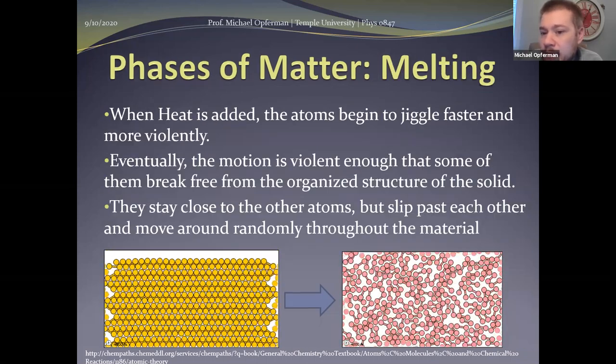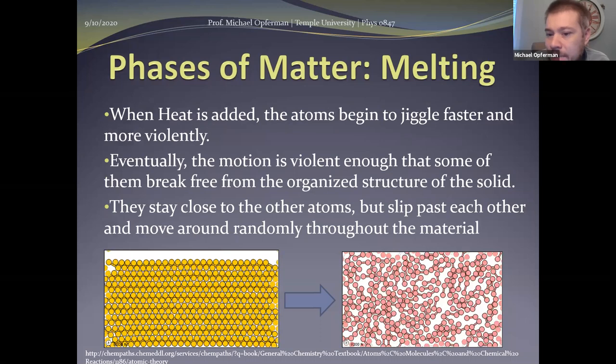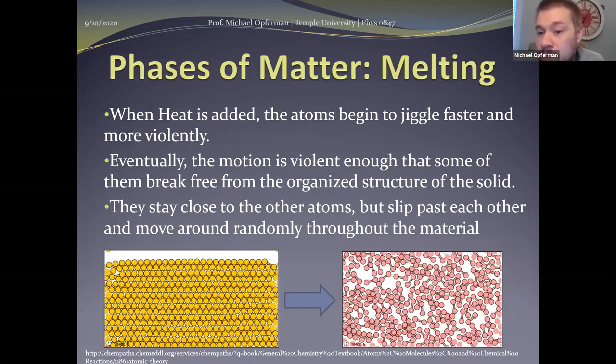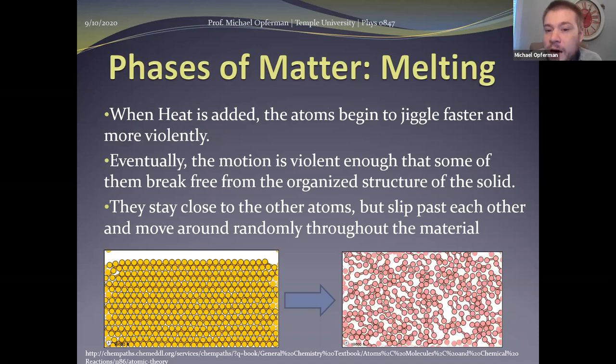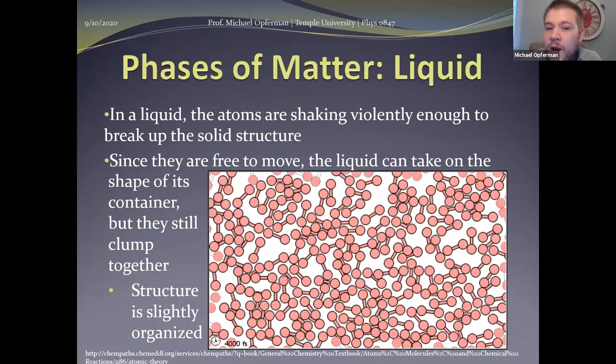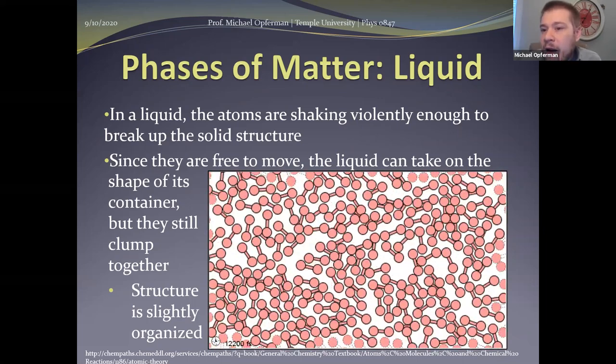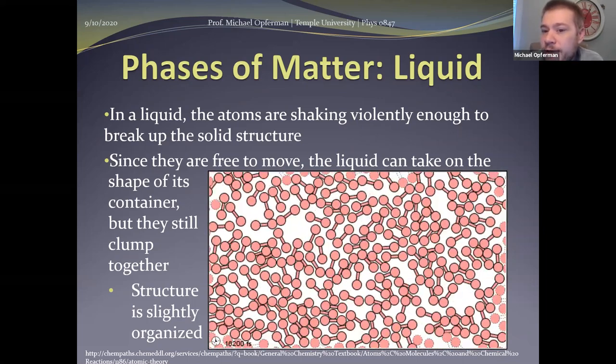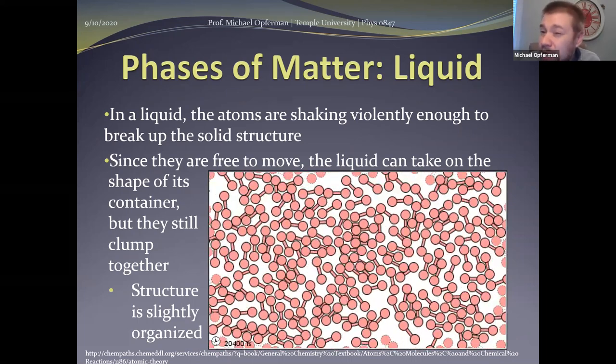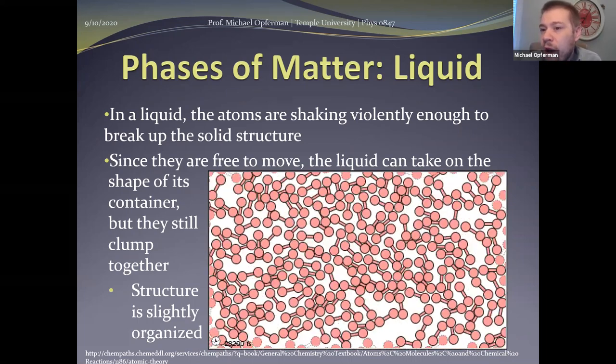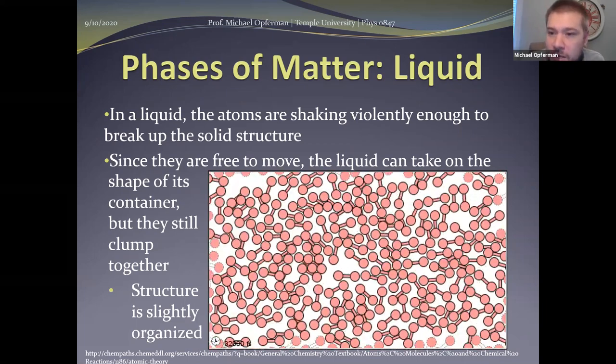If you add more heat to that system, you add more motion to that system and you cause it to melt. When it melts, it becomes a liquid where now you kind of lose the structure in the material. The atoms and molecules are now free to move around a bit more. They're still tightly packed together, but they're now moving around much more randomly and much more significantly.